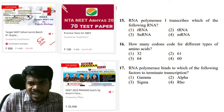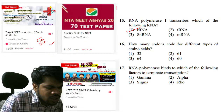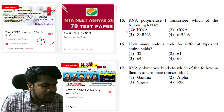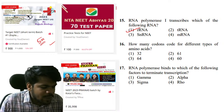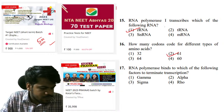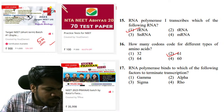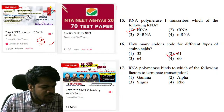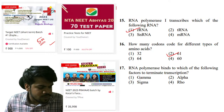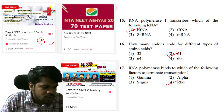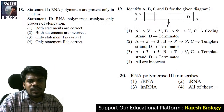Question 15: RNA polymerase one transcribes which of the following RNA? The right answer is given first by Dinesh, very good. Question 16: how many codons code for different types of amino acids? 61. The right answer given first by Jnaneshwari. Question 17: RNA polymerase binds which factor to terminate transcription? Rho factor. The right answer given by Dinesh and Jnaneshwari — excellent.